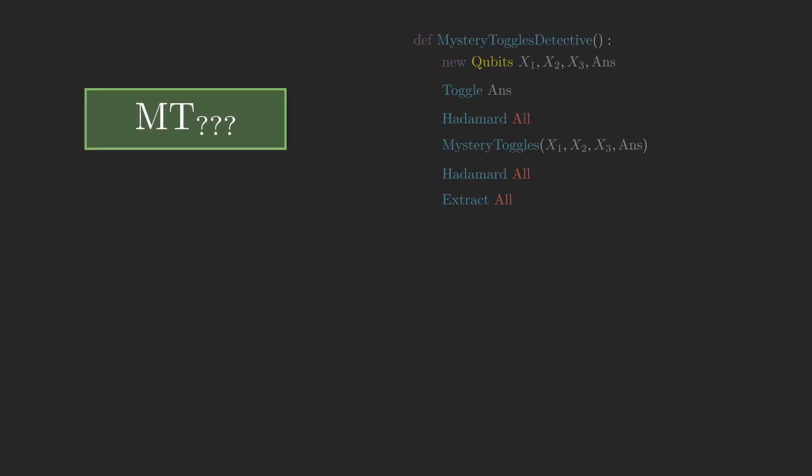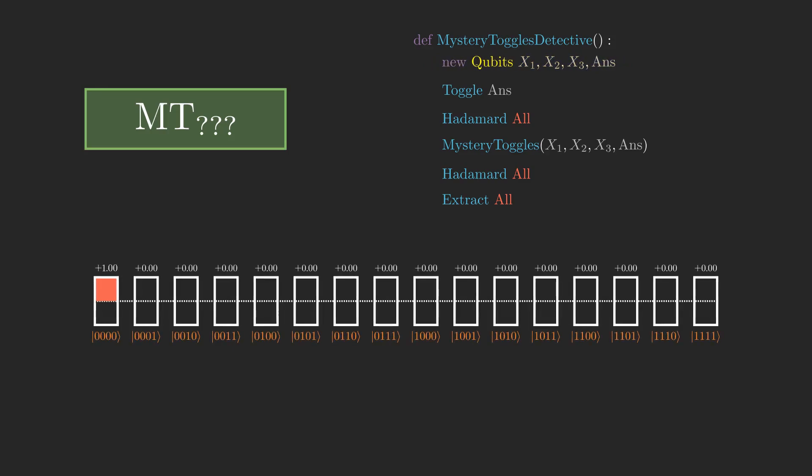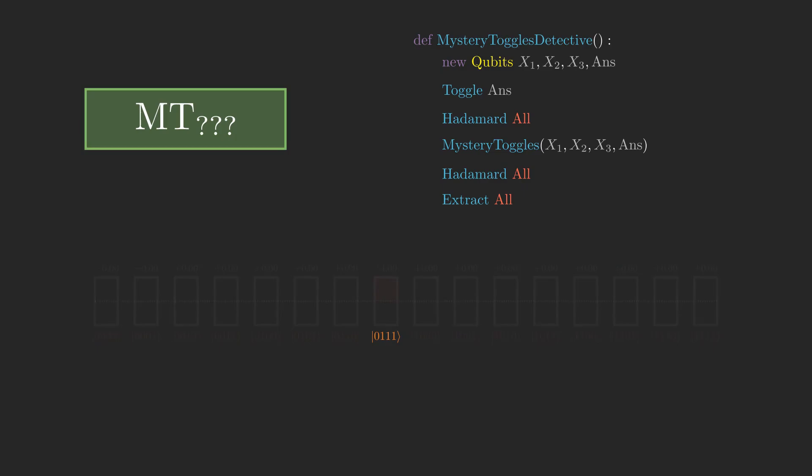Amazingly though, with the power of quantum computation, there is a way to determine which of the eight possibilities is the true mystery toggles with just one call to mystery toggles, and it uses this special Hadamard instruction you see on the screen here. In reality, this algorithm still only needs just one call to mystery toggles no matter how many x's there are.